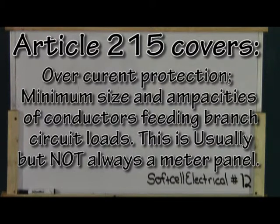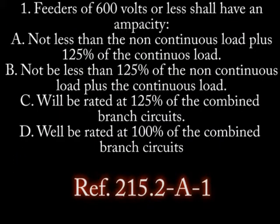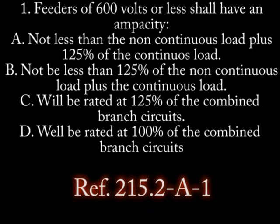This is usually a meter panel. Question 1: Feeders of 600 volts and less shall have an ampacity of: A. Not less than the non-continuous load plus 125% of the continuous load. B. Not less than 125% of the non-continuous load plus the continuous load. C. Will be rated at 125% of the combined branch circuits. D. Will be rated at 100% of the combined branch circuits.